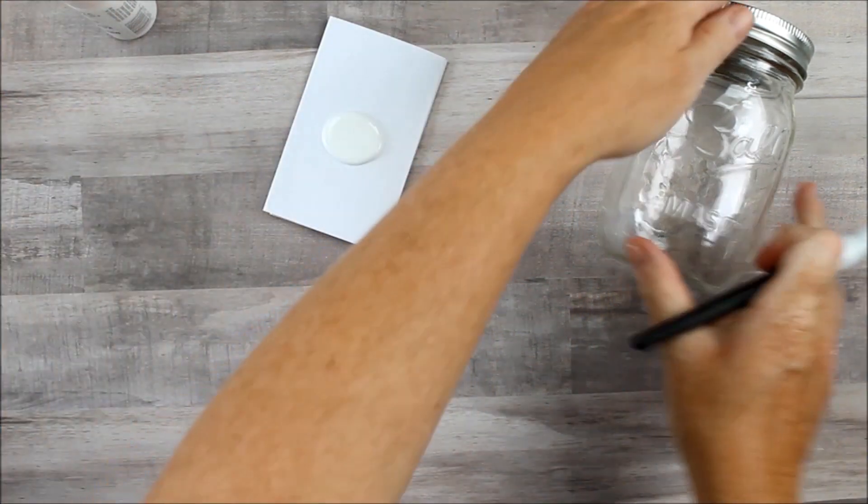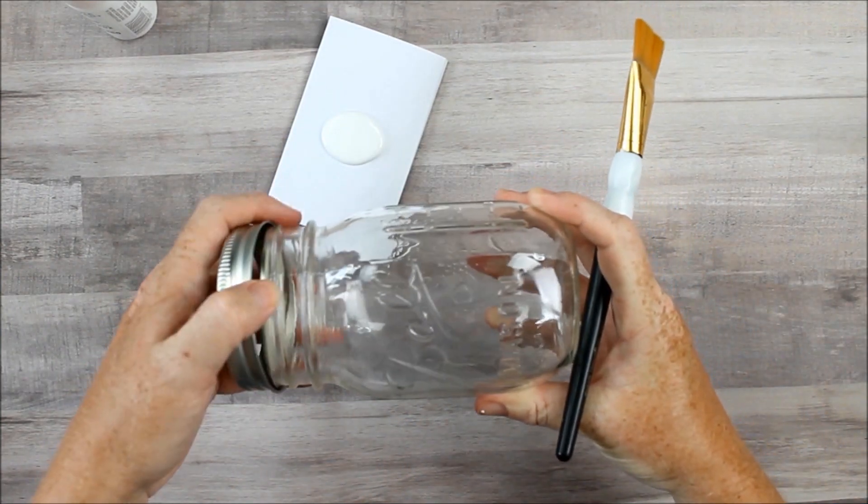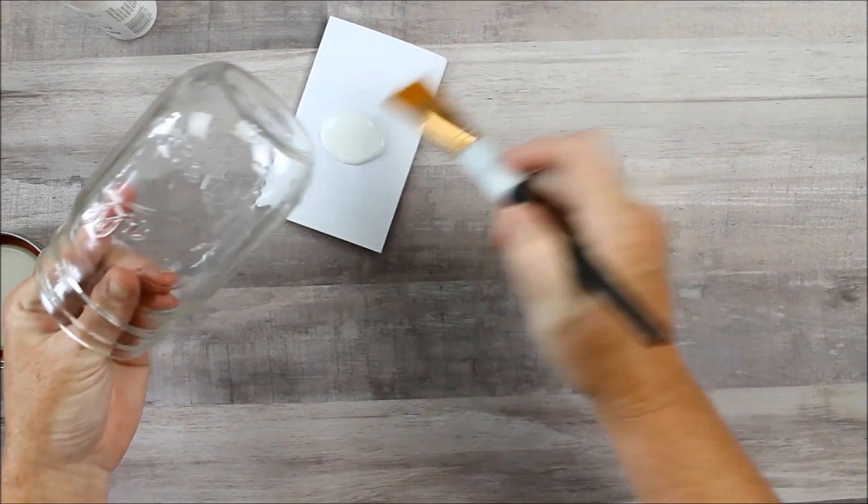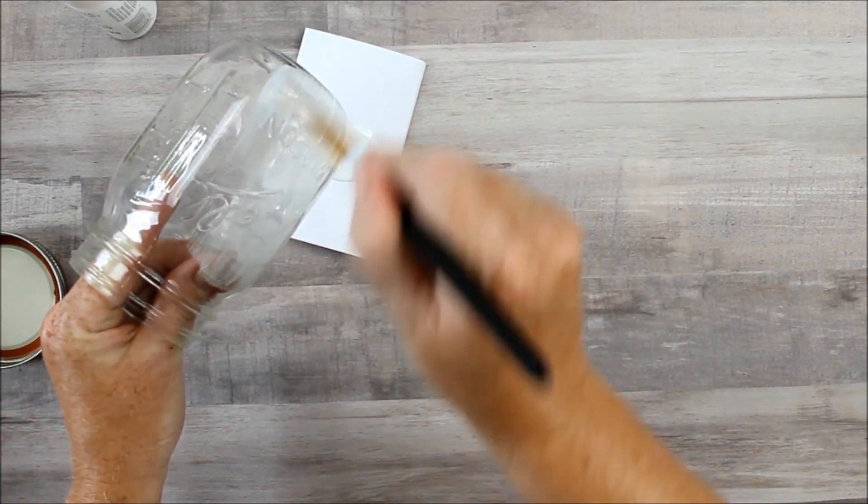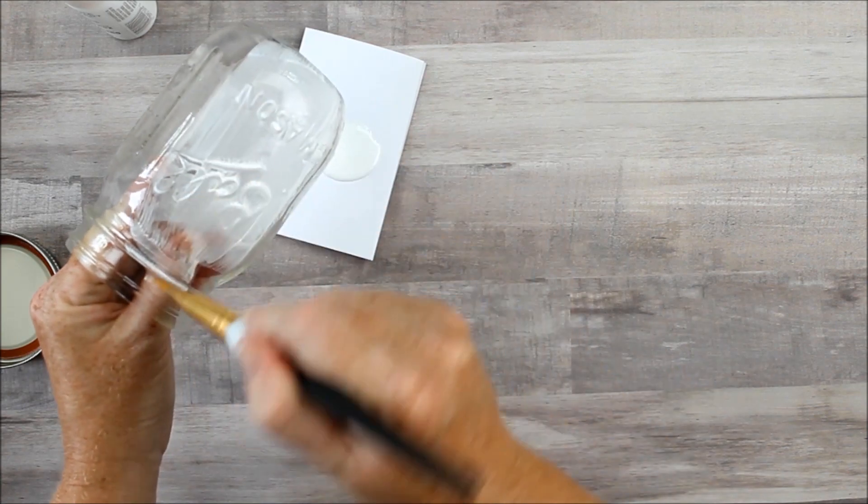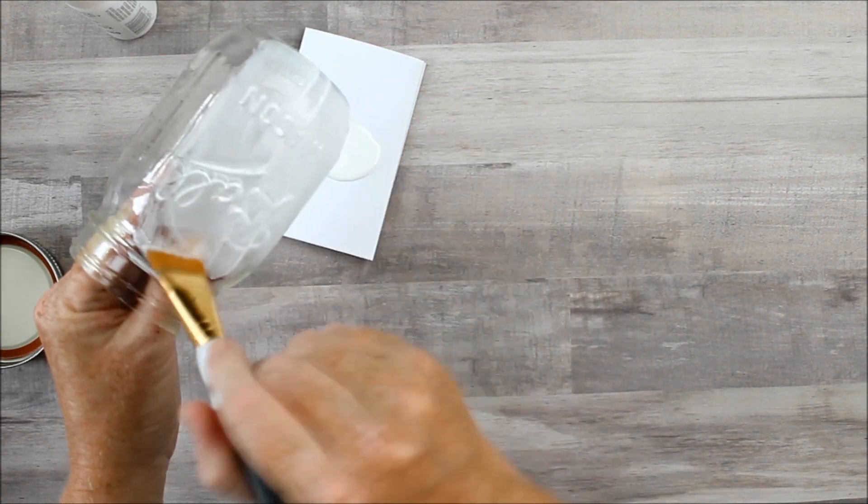Then use a paintbrush to apply to the mason jar. You want your mason jar to be clean before you paint it, and this applies any time when you're painting a mason jar. I like to clean mine with rubbing alcohol, allow it to dry, and then paint as shown here.